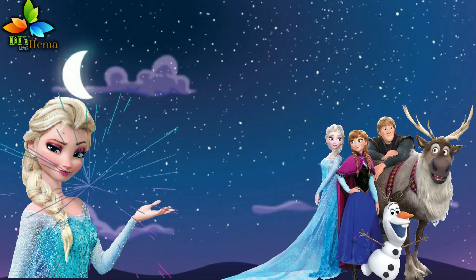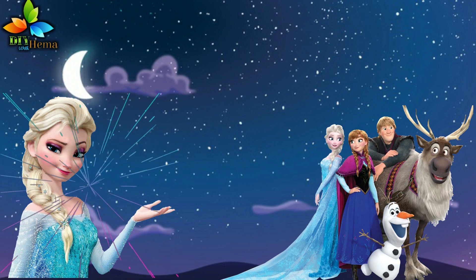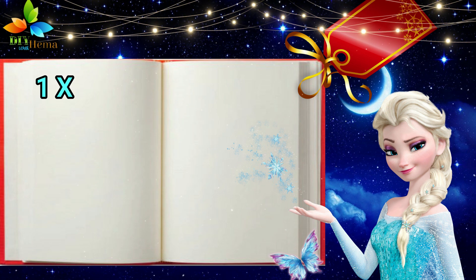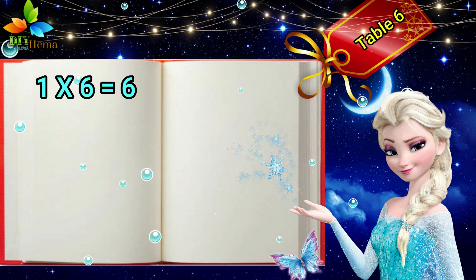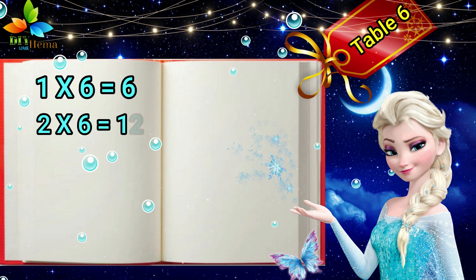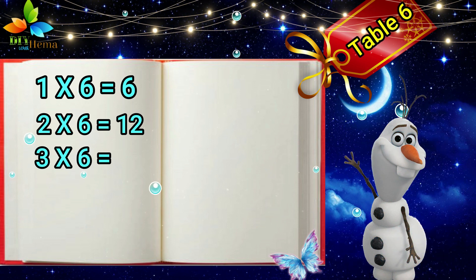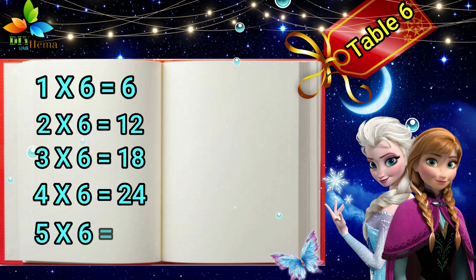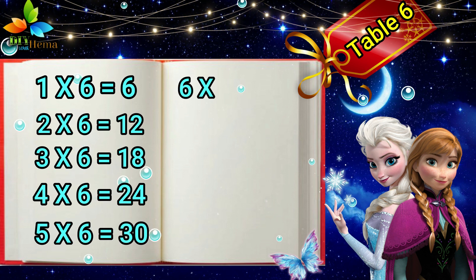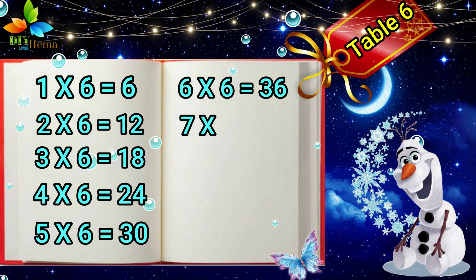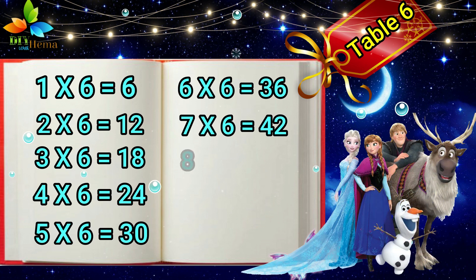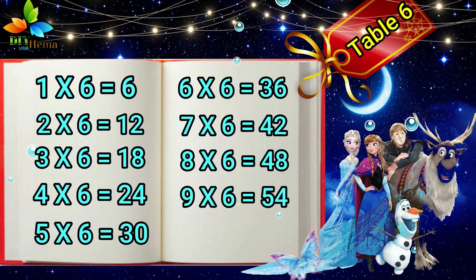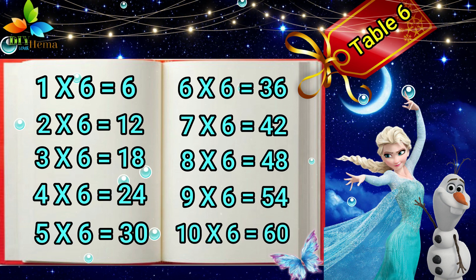Hello goodies. Shall we repeat? Come on, let us say. One, six is six. Two, six is twelve. Three, six is eighteen. Four, six is twenty-four. Five, six is thirty. Six, six is thirty-six. Seven, six is forty-two. Eight, six is forty-eight. Nine, six is fifty-four. Ten, six is sixty.